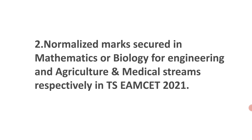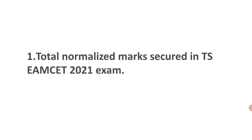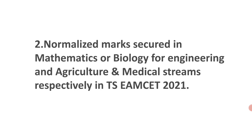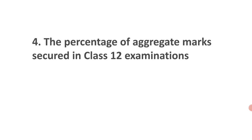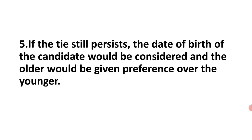To summarize the method: first, total marks are checked. If the same, Mathematics marks (for engineering) or Biology marks (for medical and agriculture) are checked. If still the same, Physics marks are checked. If that is also the same, 12th class marks are checked. The last step is the date of birth — the older candidate is given preference over the younger. This is the new tiebreaker rule.